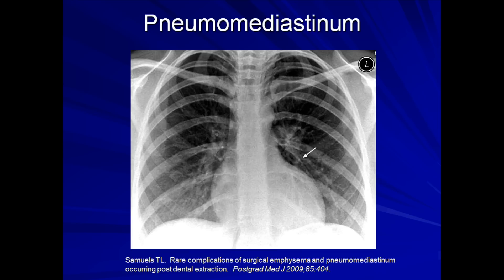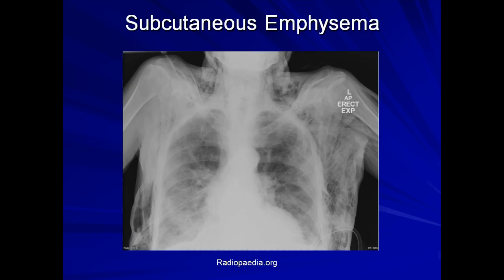And here is the very dramatic subcutaneous emphysema. Positive pressure through a ruptured alveolus or airway has forced air to dissect out into the subcutaneous tissues. This can usually be readily detected on physical exam by the presence of crepitus when gently pushing down on the affected area. I would advise against asking every medical student on the ward to come over to the affected patient and try to elicit crepitus themselves, although this can certainly be tempting from time to time.